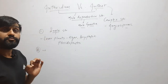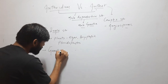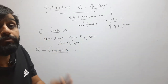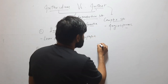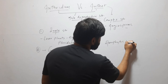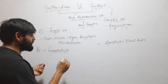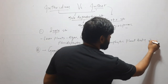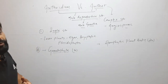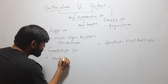The antheridium is always formed on the gametophytic plant body, while the anther is formed on the sporophytic plant body. Gametophytic means a haploid plant body, and sporophytic means a diploid plant body. So since antheridium is formed on the gametophytic plant body, it will be a haploid structure.